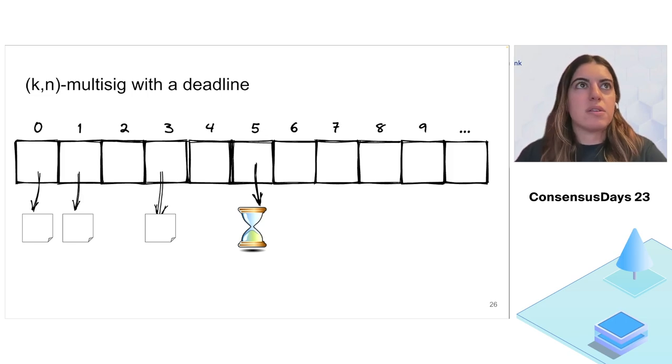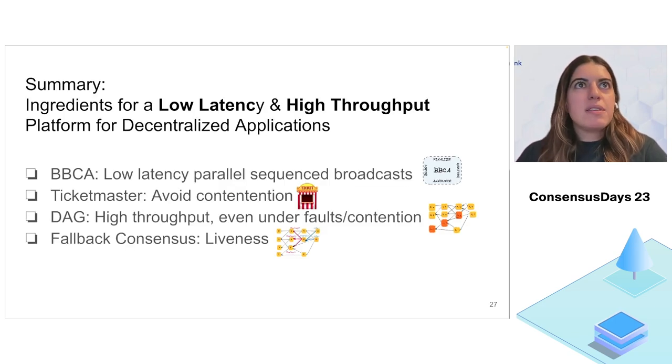To summarize, our ingredients for a low latency and high throughput platform for decentralized applications are four: Babka, which allows low latency parallel sequenced broadcast; a Ticketmaster to avoid contention as much as possible; a DAG to ensure high throughput under faults or contention; and finally, consensus only as a fallback when we need to guarantee liveness. That's it. Thank you very much.